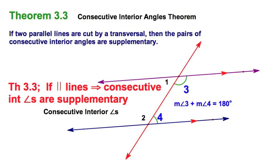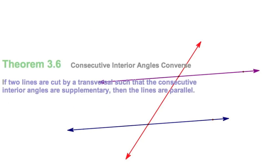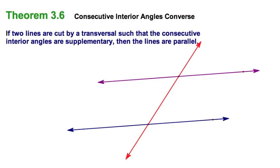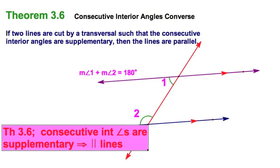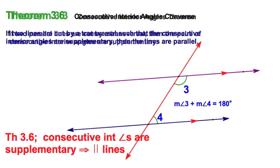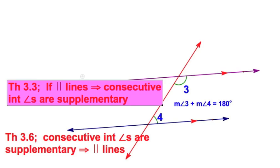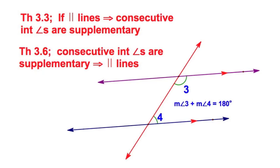The converse: if I start with these consecutive interior angles being supplementary, then I can conclude that the lines are parallel. That's Theorem 3.6, written in shorthand. Theorem 3.3 and its converse Theorem 3.6: parallel lines mean consecutive interior angles are supplementary.